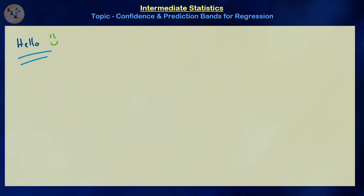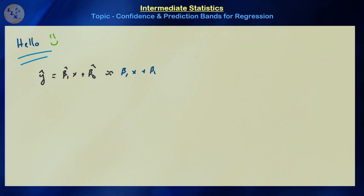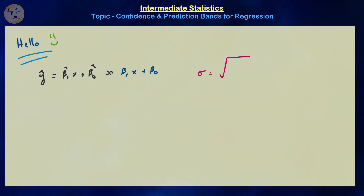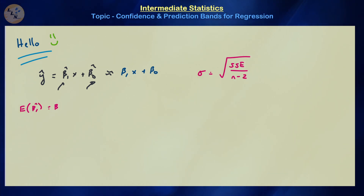Let's start off by going over a couple of basics we've already discussed. The simple linear regression model is ŷ = β̂₁x + β̂₀, which is an approximation for the line β₁x + β₀. From the assumptions of the model, the standard deviation σ is equal to the square root of the error sum of squares divided by n minus 2, or the square root of the mean square error. The parameters β̂₁ and β̂₀ satisfy: E[β̂₁] = β₁ and E[β̂₀] = β₀.